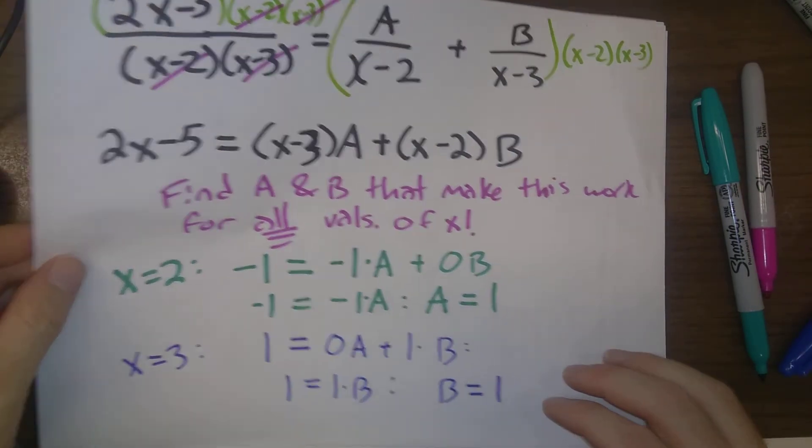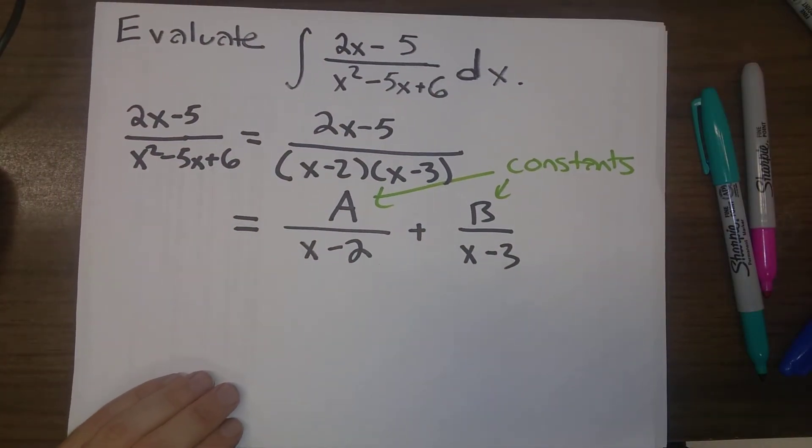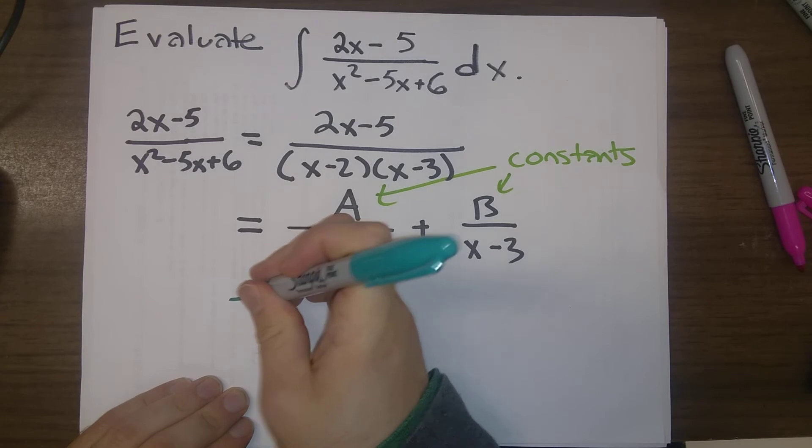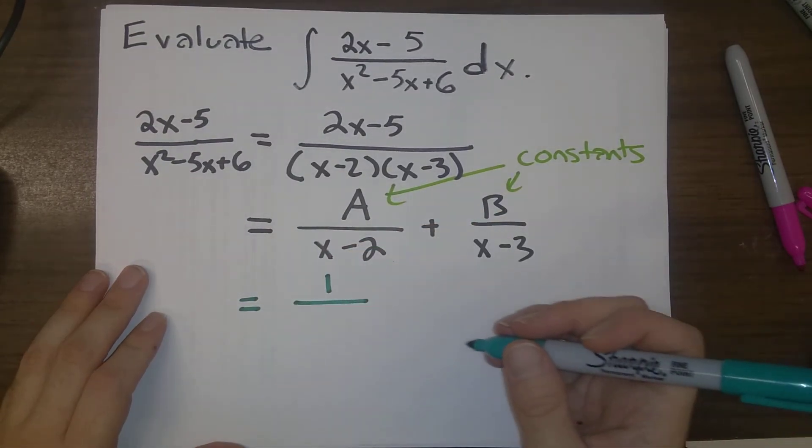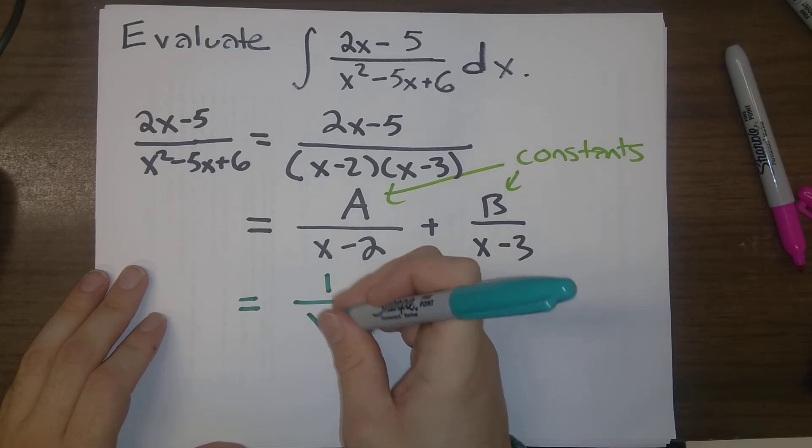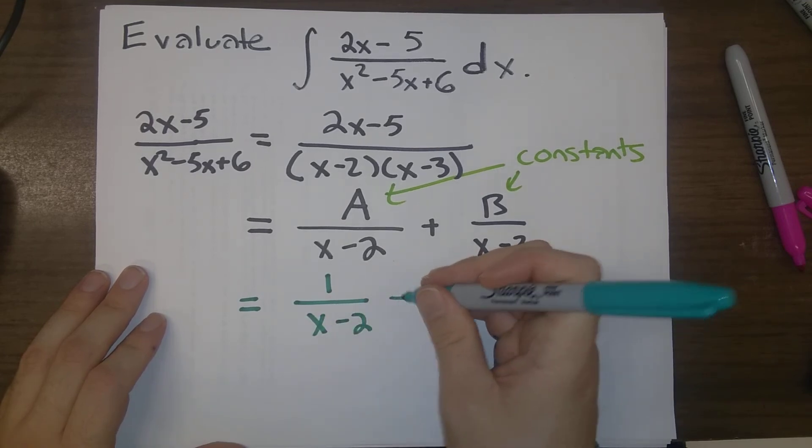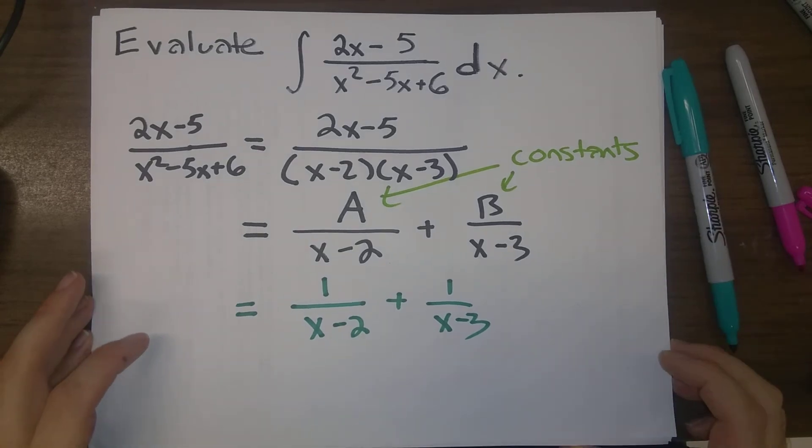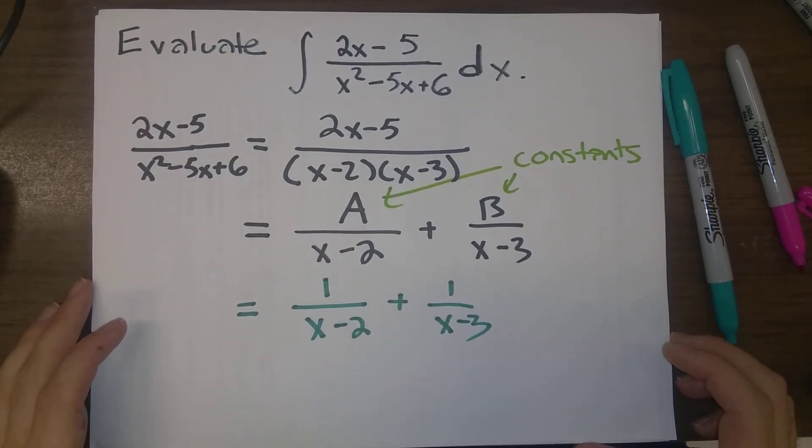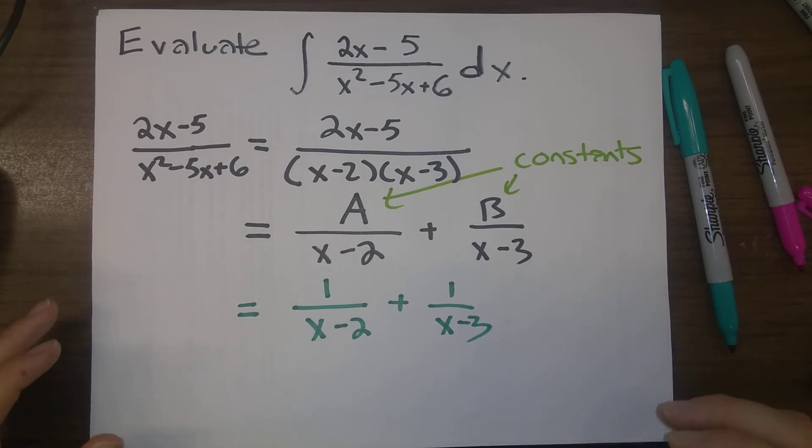And so what all of this tells us is, let's go back to this slide here. This tells us that 2x minus 5 over x minus 2 times x minus 3 is 1 over x minus 2 plus 1 over x minus 3. So that's the heart of the method of partial fractions. It's coming up with these coefficients.